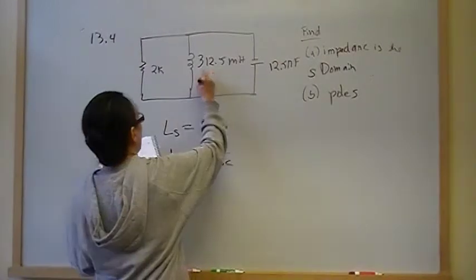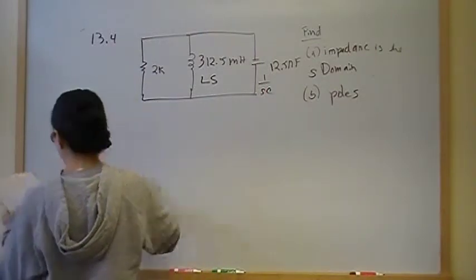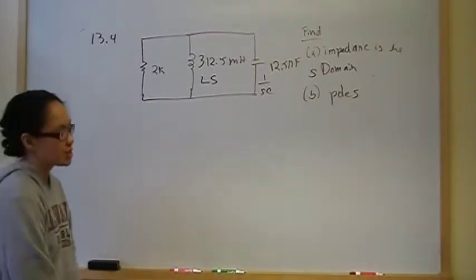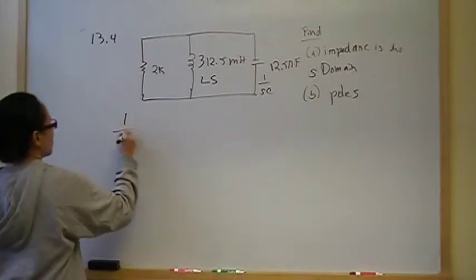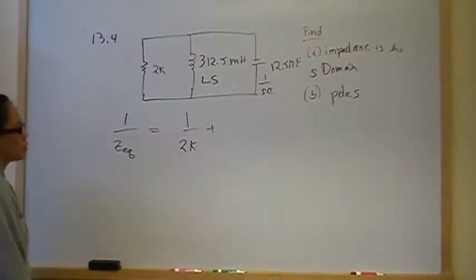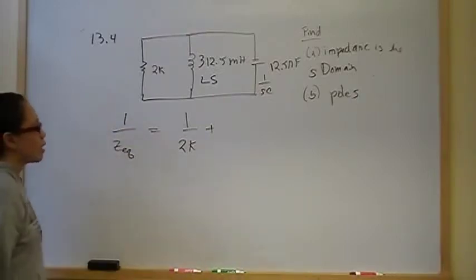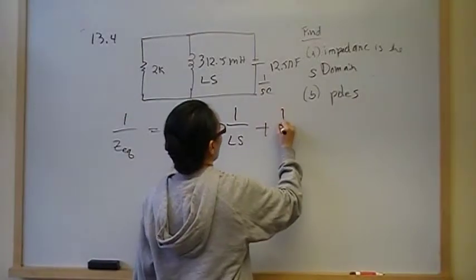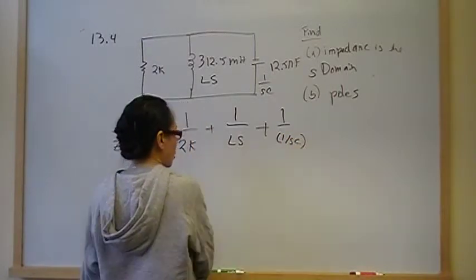So let's replace the inductor with LS and the capacitor with 1 over SC. Everything that applied before still applies — nothing changed. Laws don't change just because we're in the S domain. So 1 over Z_EQ is equal to 1 over 2K, which is just the sum of 1 over the individual impedances: 1 over LS plus 1 over 2K plus SC, since 1 over (1 over SC) is just SC.